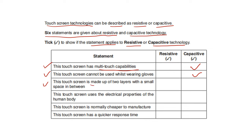This touchscreen is made up of two layers with a small space in between — that is resistive. This touchscreen uses electrical properties of the human body — that is capacitive. This touchscreen is normally cheaper to manufacture — that is resistive. And this touchscreen has a quicker response time — that is capacitive.